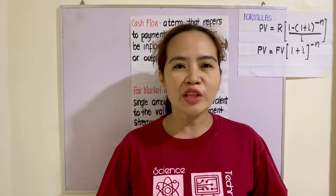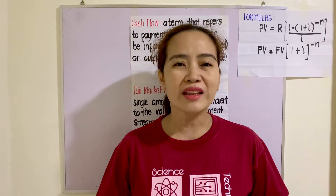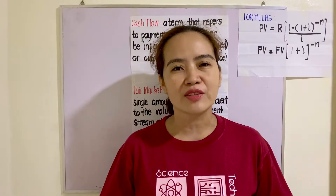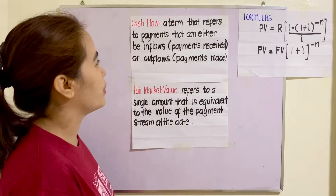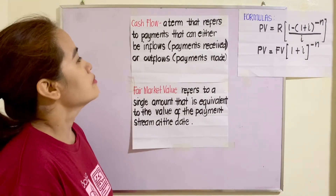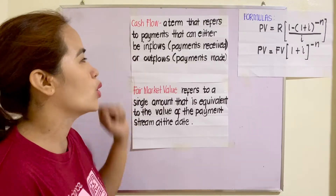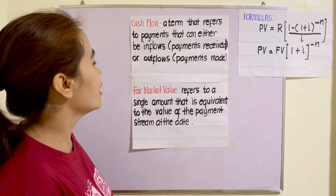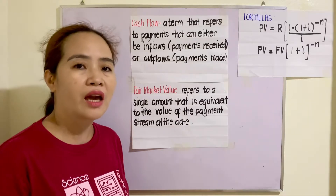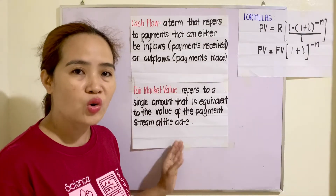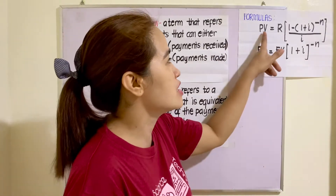Our topic for today is calculating the fair market value of a cash flow. Cash flow is a term that refers to payments that can either be inflows — payments received — or outflows — payments made. Take note that cash flow is a payment. Fair market value refers to a single amount that is equivalent to the value of the payment stream of the day. This is also known as the economic value.